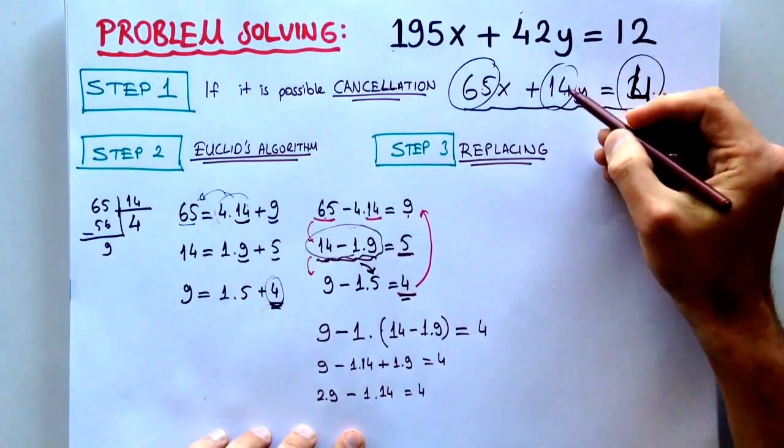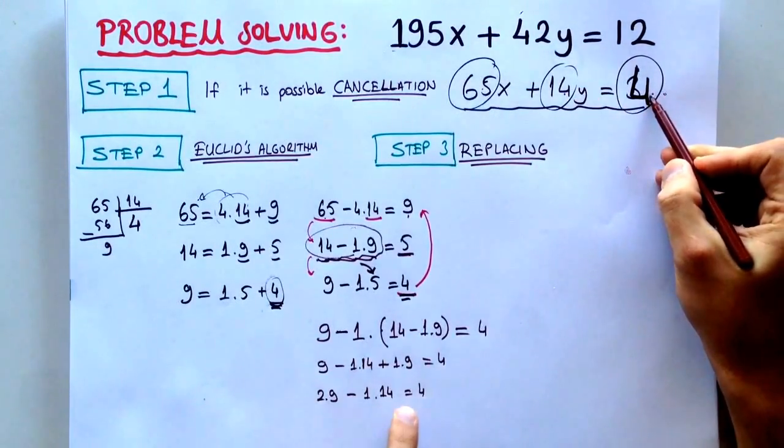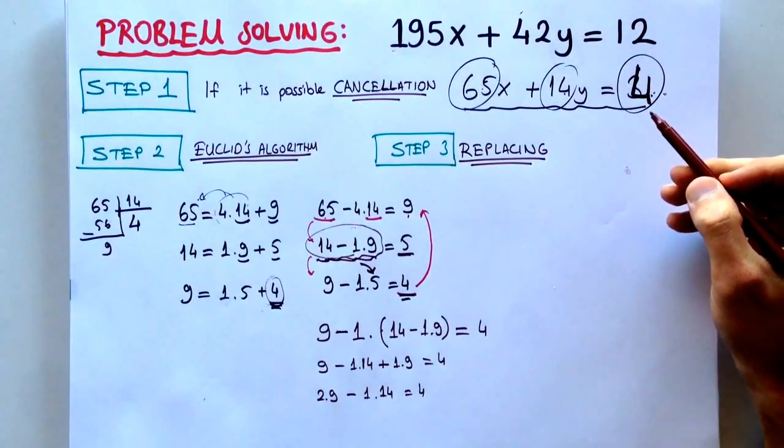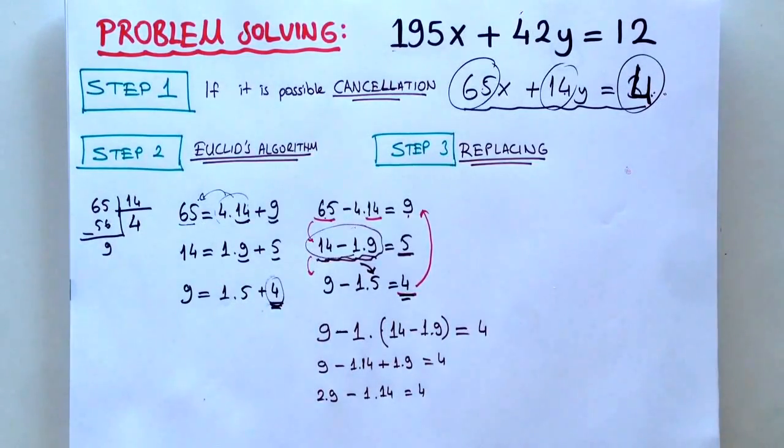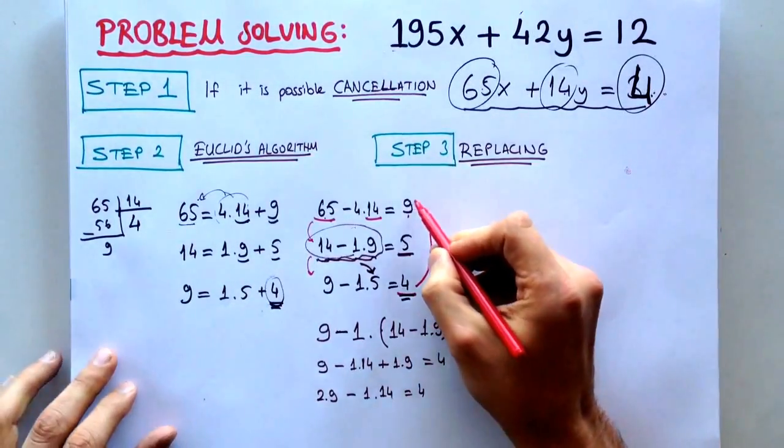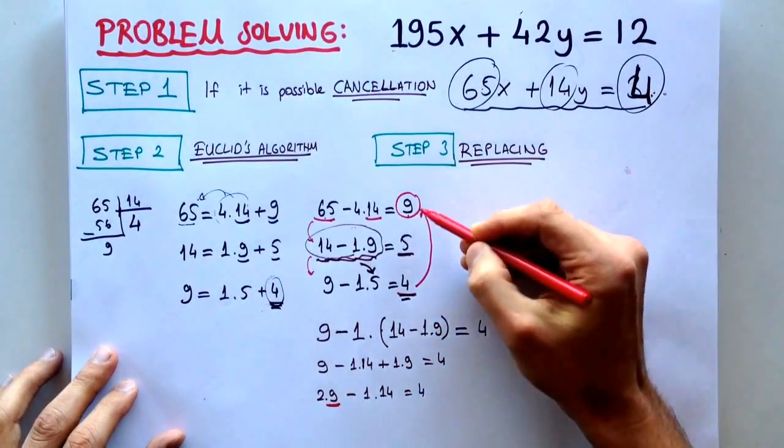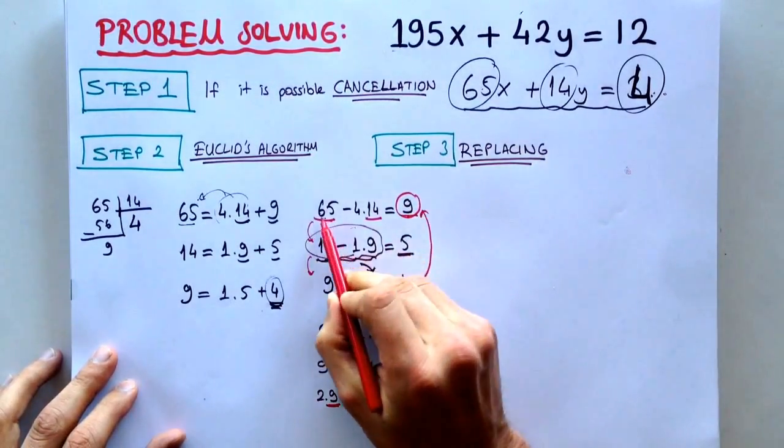And we are very close. It's 4 and 14, and we are in a good way. Then we have to substitute 9 to here. You see, this is 9. It has 65, and we have to use 65.